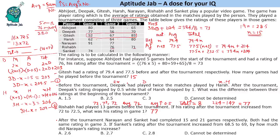Subtracting the two equations: 3h minus x minus (3d minus x) equals 209 minus 204.5. The x terms cancel, giving 3 times (h minus d) equals 4.5. Therefore h minus d equals 1.5. The difference between their ratings at the beginning of the tournament is 1.5.